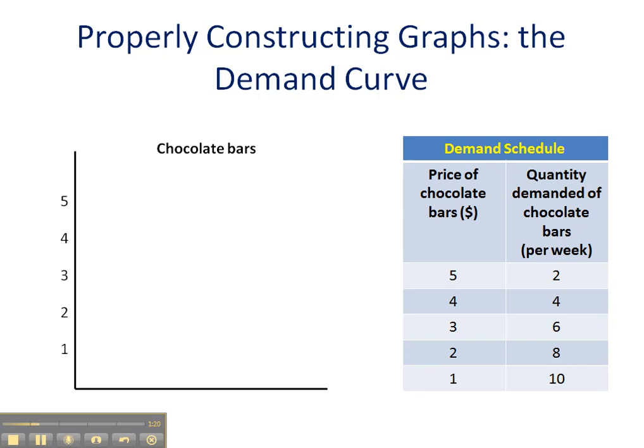We're going to add our units for the vertical axis. For a market, units are always in price — in this case dollars is assumed. Go ahead and label our vertical axis 'price.' The horizontal axis is always quantity. In this case the units are by 2 instead of by 1. Now we're ready to go.